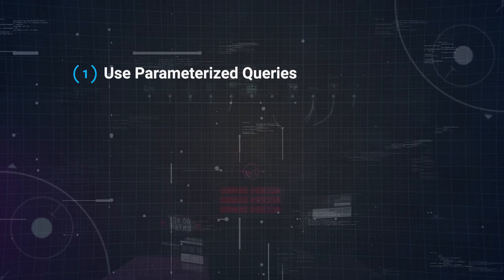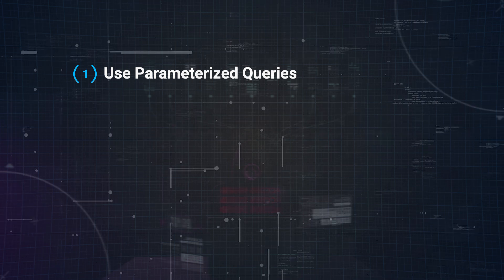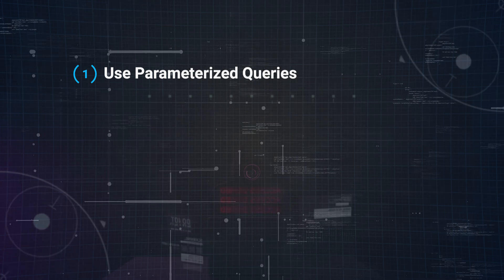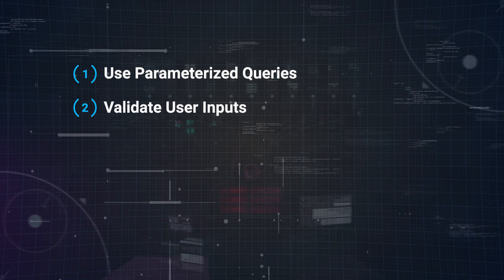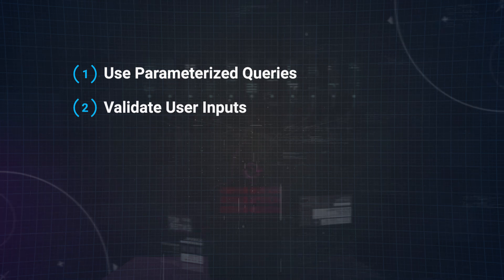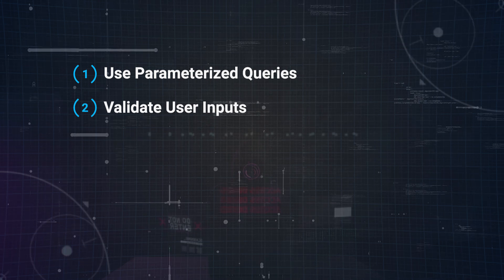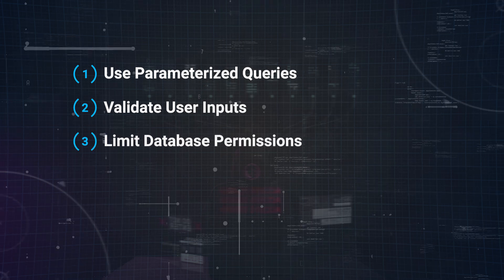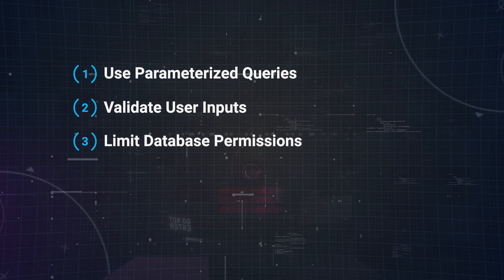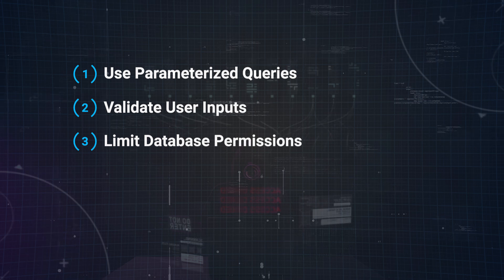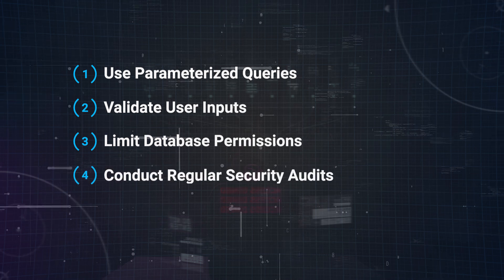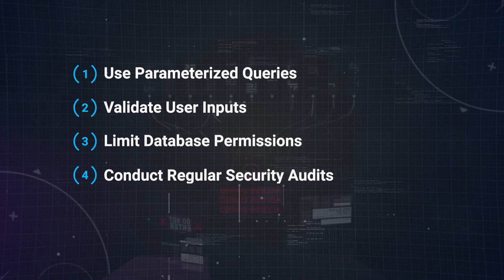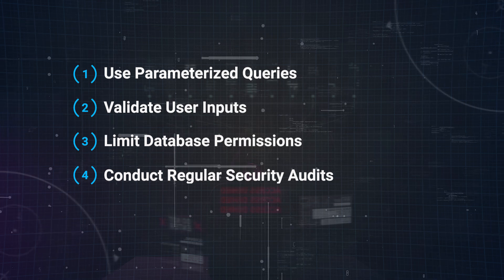Here are a few things you can do to prevent SQL injection attacks. Number one, use parameterized queries — ensure your SQL queries are parameterized, which helps prevent the insertion of malicious code. Number two, validate user inputs — implement strong input validation to ensure only expected data is processed. Number three, limit database permissions — restrict database access to only what is necessary for each user or application. Number four, conduct regular security audits — regularly review and test your systems for vulnerabilities to stay ahead of potential threats.